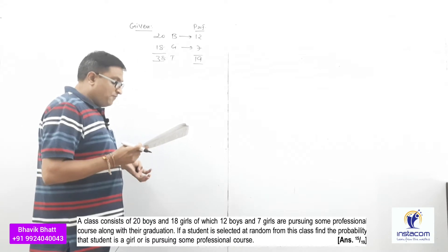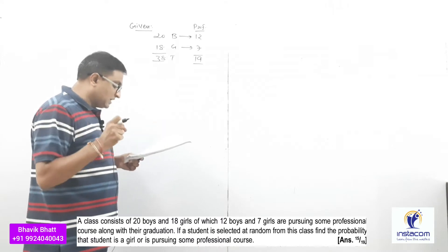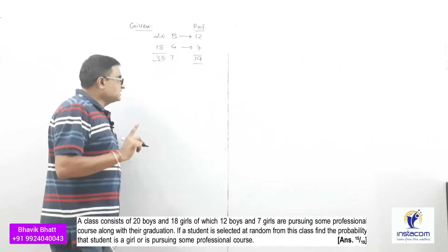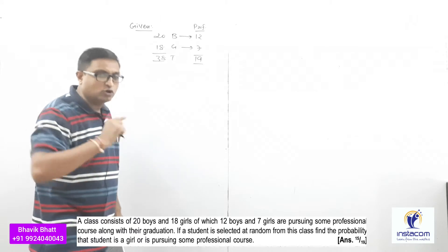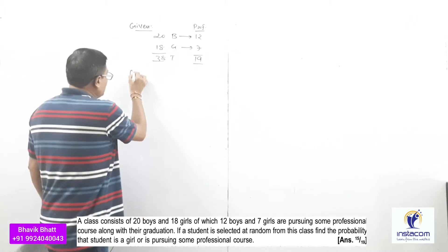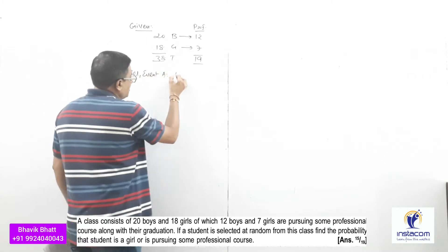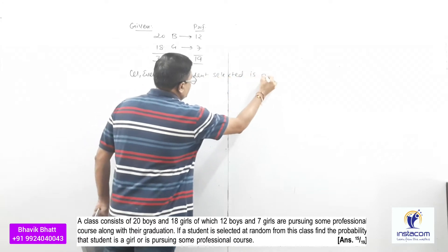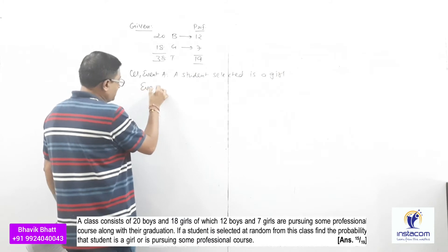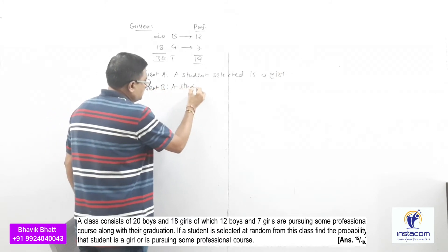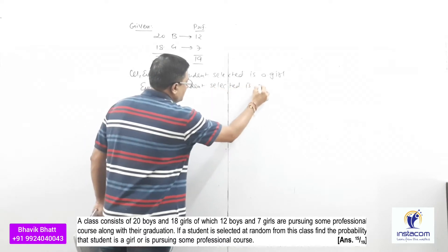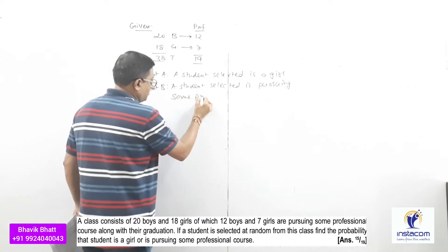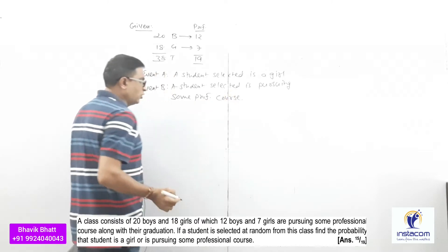If a student is selected at random from this class, let event A be that the student is a girl, and event B be that the student is pursuing some professional course along with graduation.